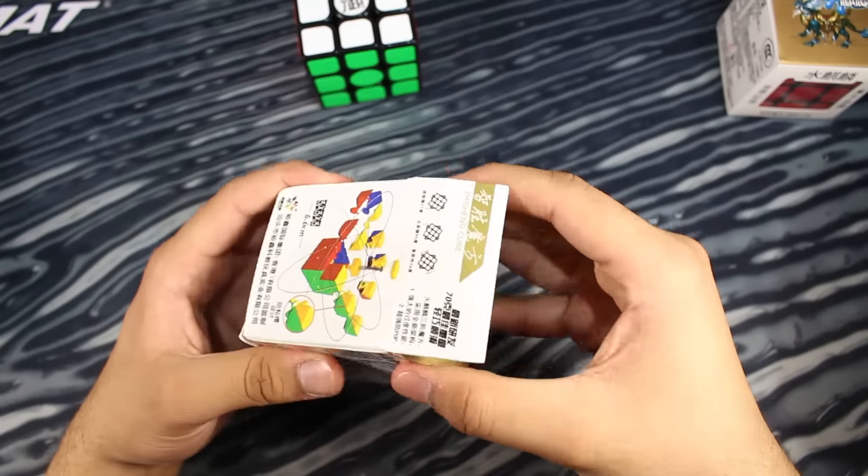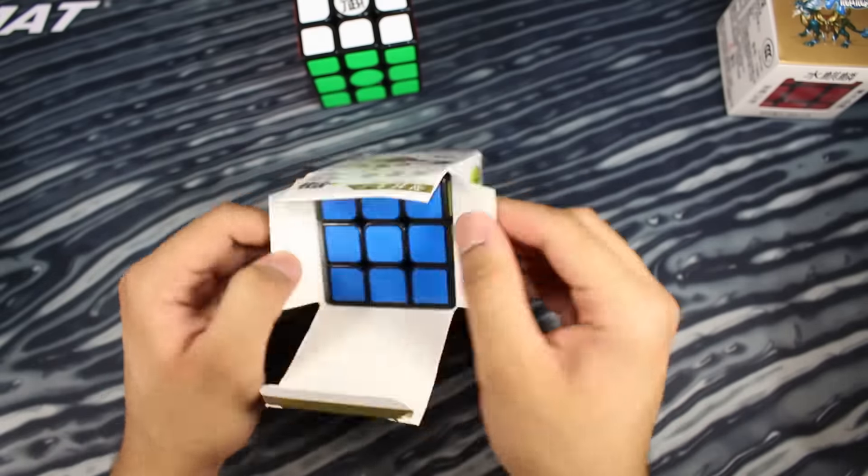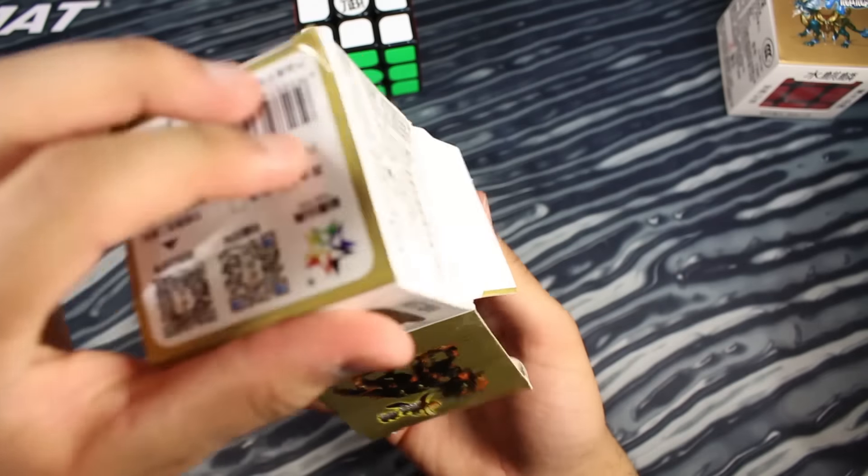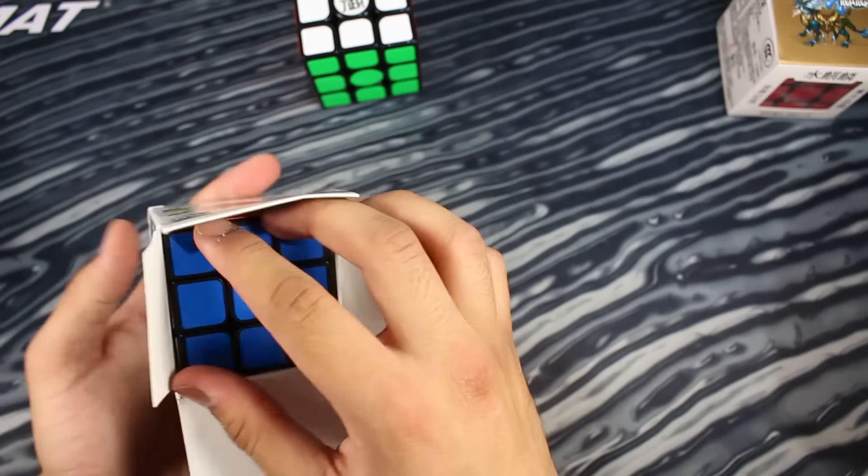Next, let's take a quick look at the YuXin Fire 3x3. This cube actually came out a while ago. It's supposed to be a budget 3x3 and sort of in competition to the YJ GuanLong.